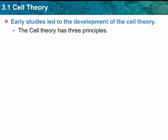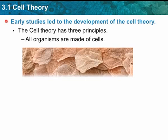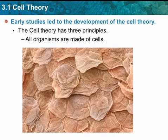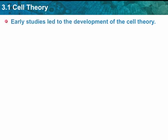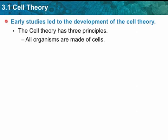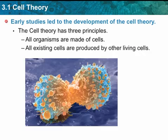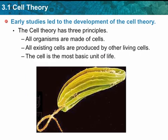The cell theory has three principles. All organisms are made of cells — so all life comes from cells. All existing cells are produced by other cells, so cells come from cells. And the cell is the most basic, smallest unit of life. Anything smaller than a cell is not alive.